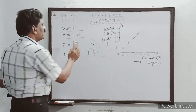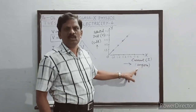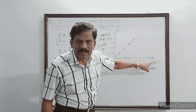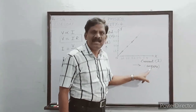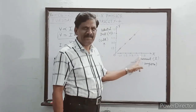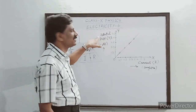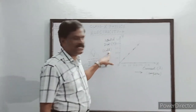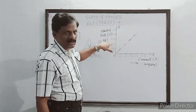Look at this graph. The current flowing through the resistor R is taken along the x-axis in ampere: 0.1, 0.2, 0.3, 0.4 up to 0.5. On the y-axis, the potential difference across the resistance R is expressed in volts, with each division representing 1.5 volt: 1.5, 3, 4.5, 6 and 7.5 volt.